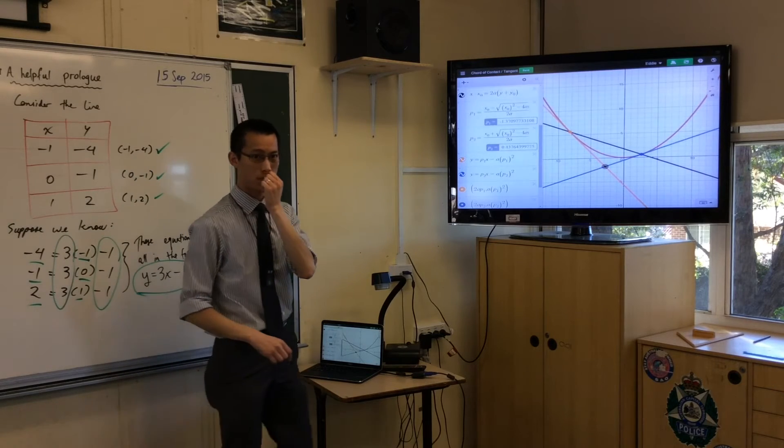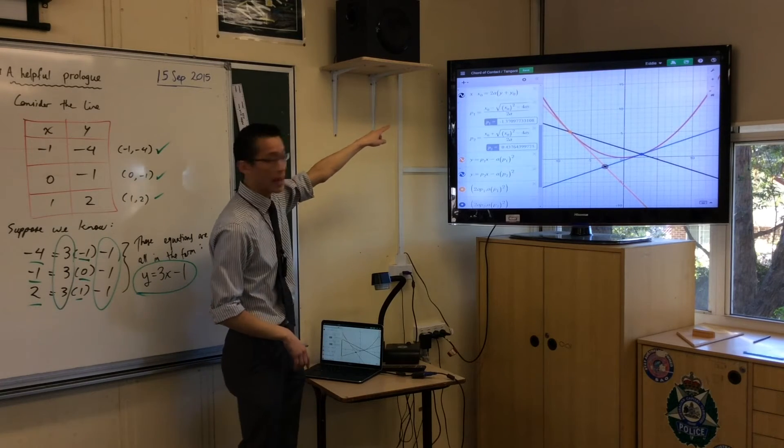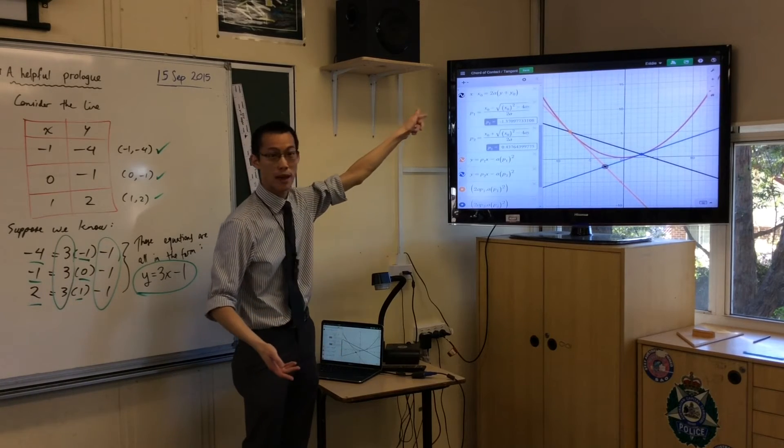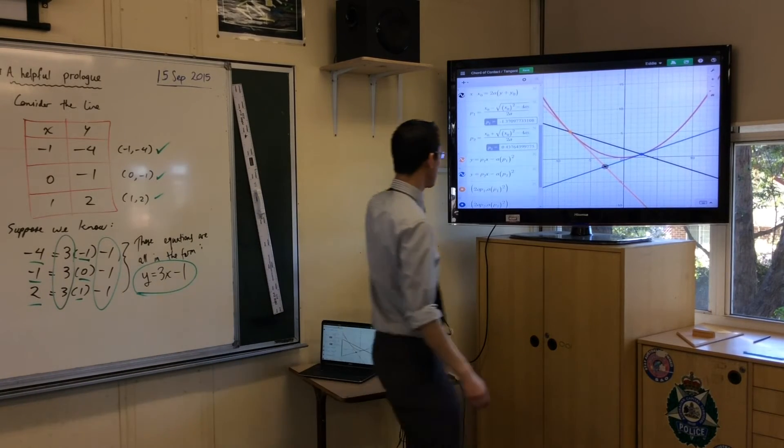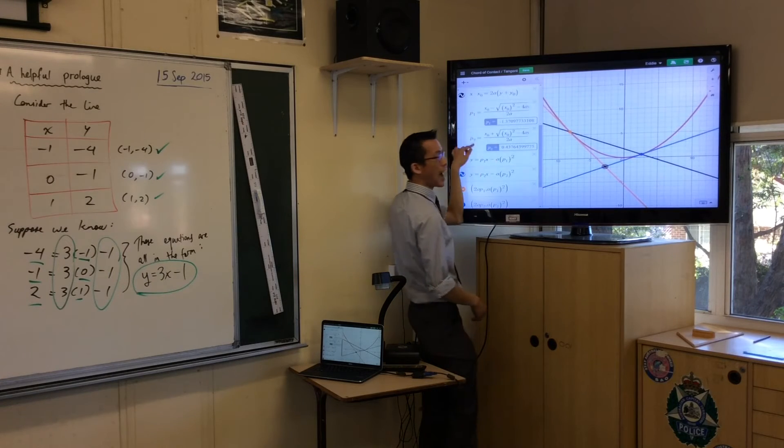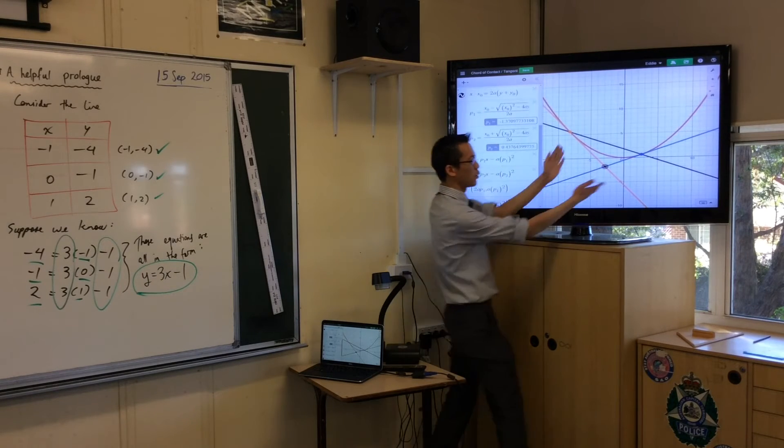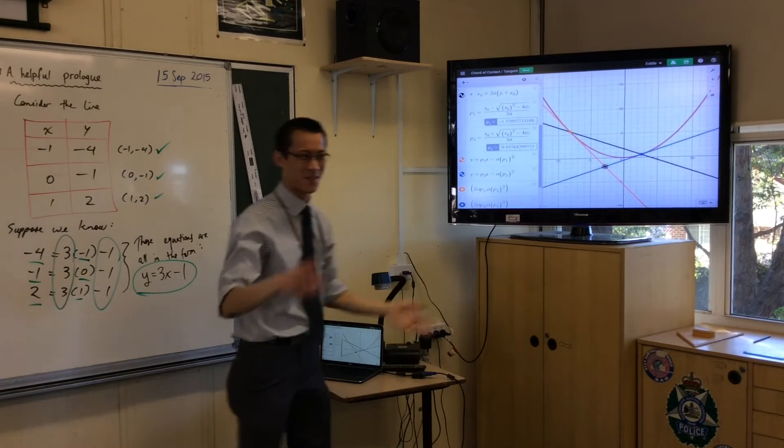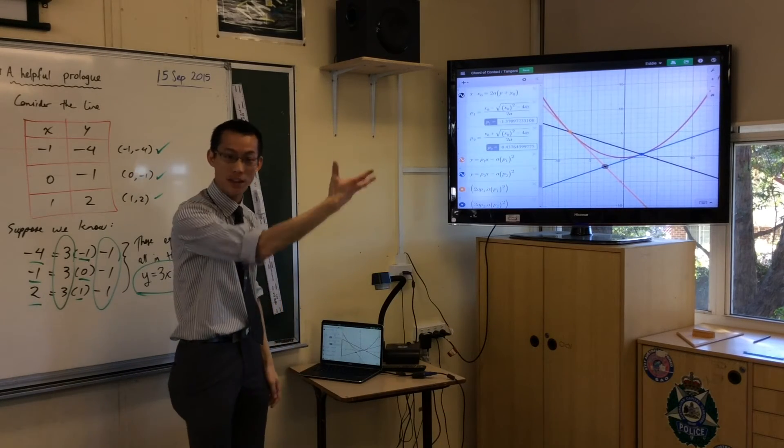That's the equation of the chord of contact. That's x-naught x equals 2ay plus y-naught. All of this business down here, I have to get these numbers in order to work out where these tangents go. I can't just say, please work out this tangent for me. I need to give it the right equations and coordinates.